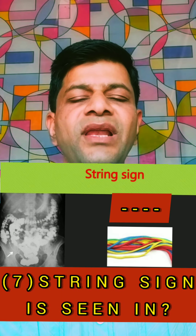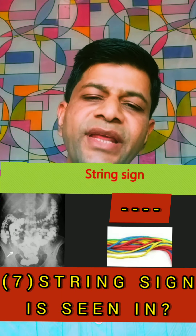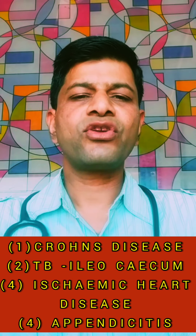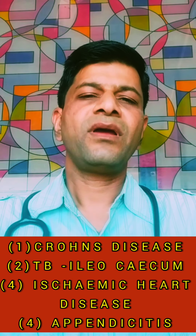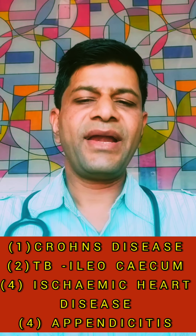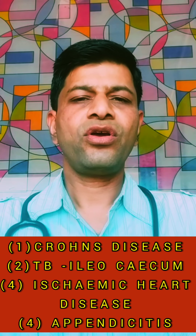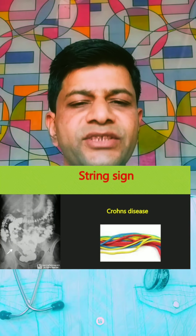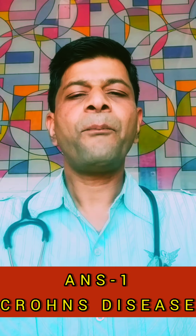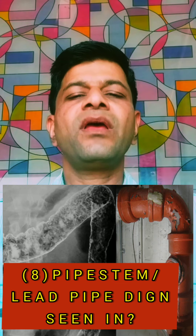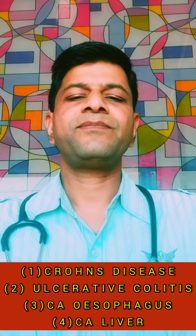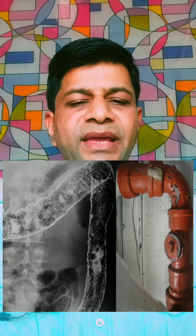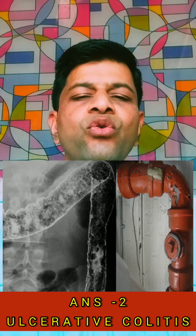Next MCQ: String sign is seen in Crohn's disease, tuberculosis of ileocecum, ischemic heart disease, or appendicitis. The answer is string sign is seen in Crohn's disease. Next MCQ: Pipe stem appearance is seen in Crohn's disease, ulcerative colitis, CA esophagus, or CA liver. Pipe stem appearance is seen in ulcerative colitis.